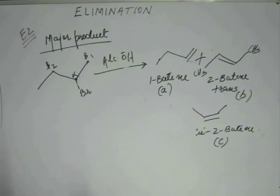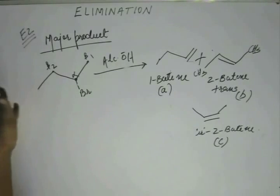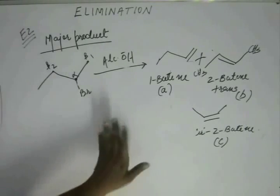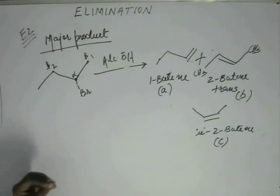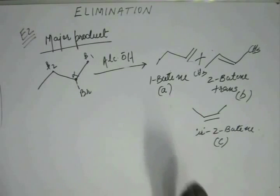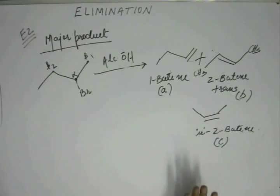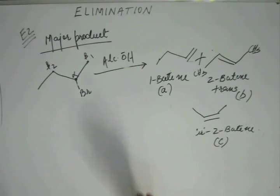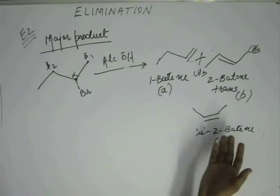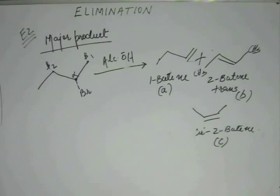This is how you identify major products in E2 elimination. It is quite simple and straightforward: look for how many beta positions there are, draw all possible alkenes, and assess their stability by the number of alpha-hydrogens. The alkene with more alpha-hydrogens is more stable. If two products have the same number of alpha-hydrogens, consider repulsion — the one with less repulsion is more stable. The most stable product is the major product. That is the theory of E2 elimination.